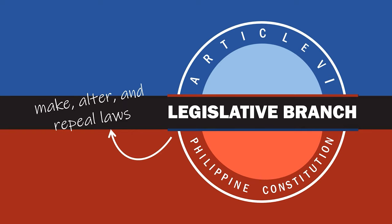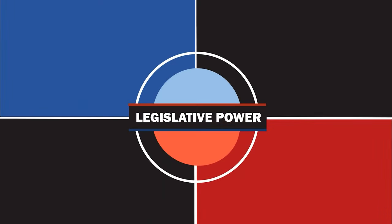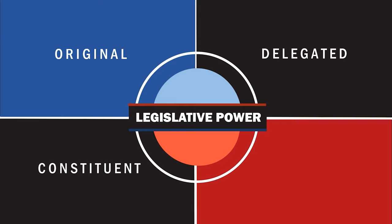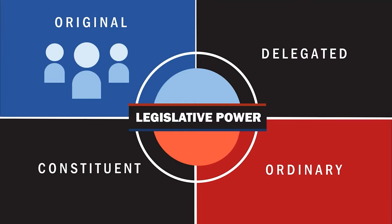Here are the classifications of legislative power: original, delegated, constituent, and ordinary. Let's first talk about the original power — this is possessed by the people in their sovereign capacity. The original legislative power of the people is exercised via initiative and referendum.